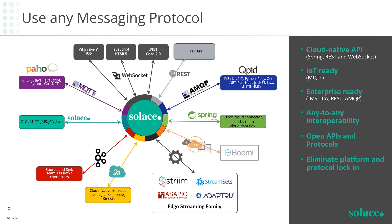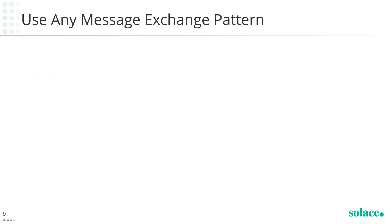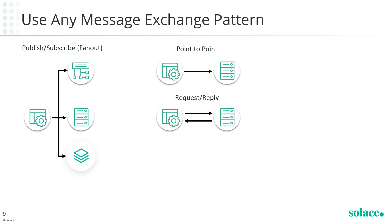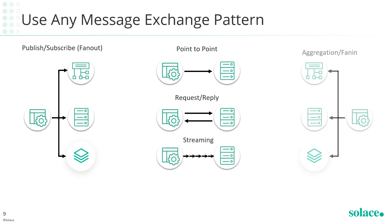Solace also partners with leading streaming vendors to build bridges that let more sources and targets connect to the broker and the event mesh, convert raw data into events, share events across the enterprise, and analyze event streams. One prime example is Asapio, which connects legacy SAP data to the event mesh. Solace has also developed connectors for technologies like Kafka. PubSub Plus Event Broker supports multiple message exchange patterns including publish-subscribe, point-to-point, request-reply, streaming, and aggregation.